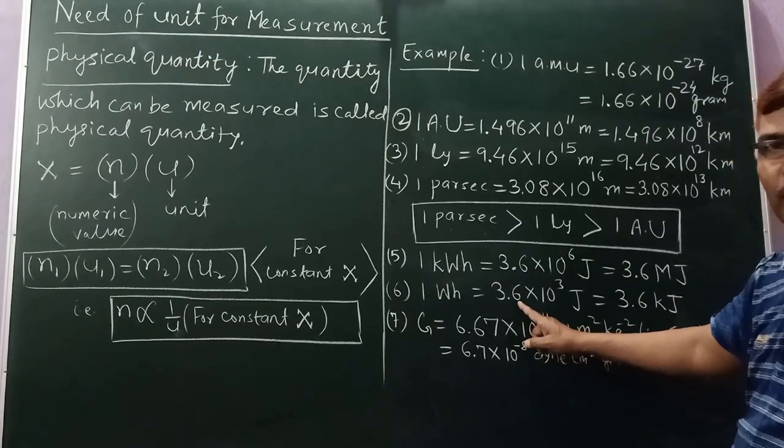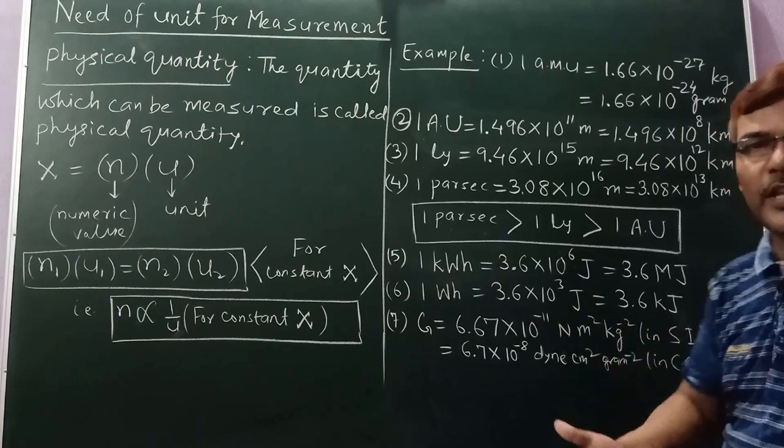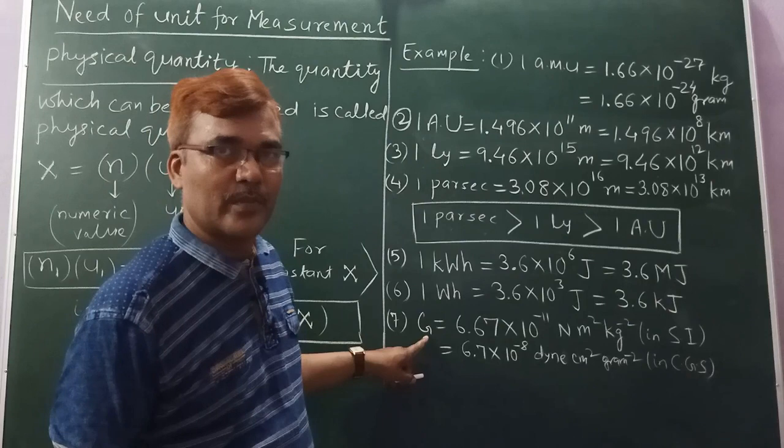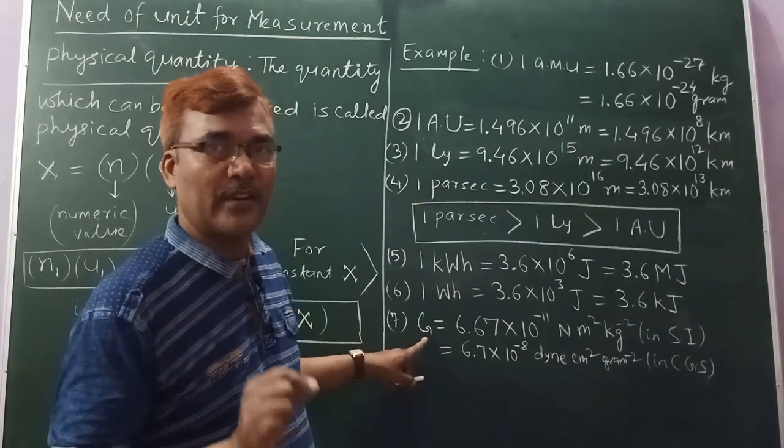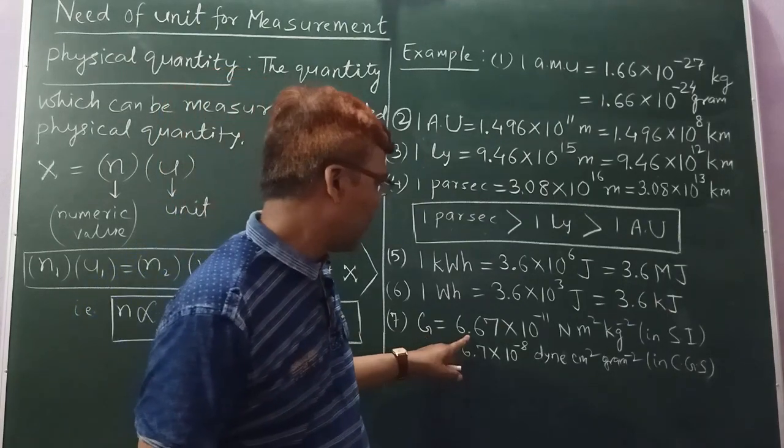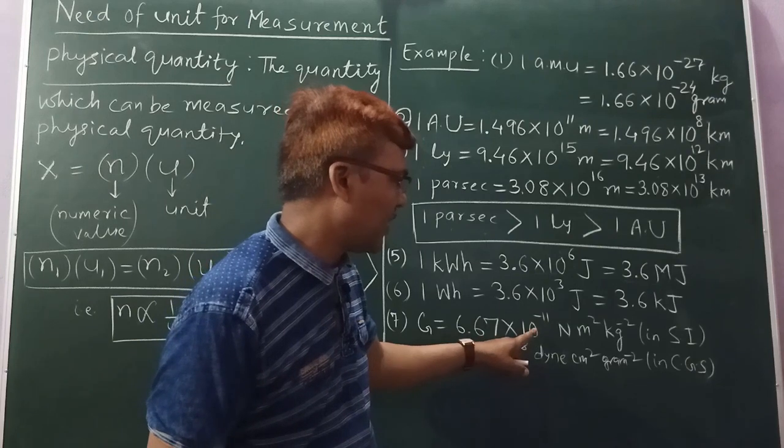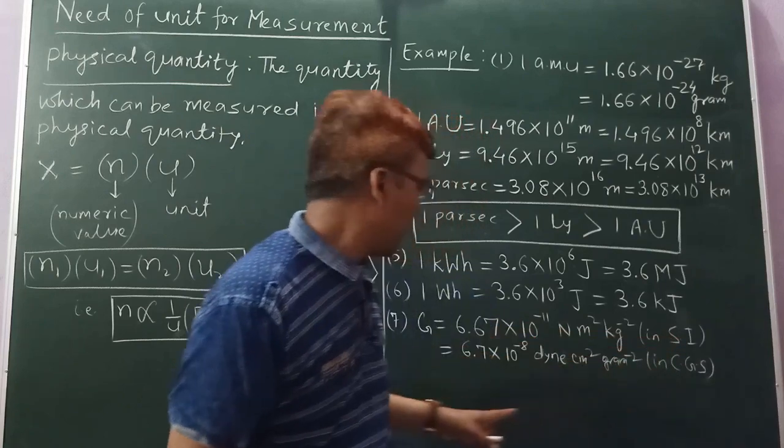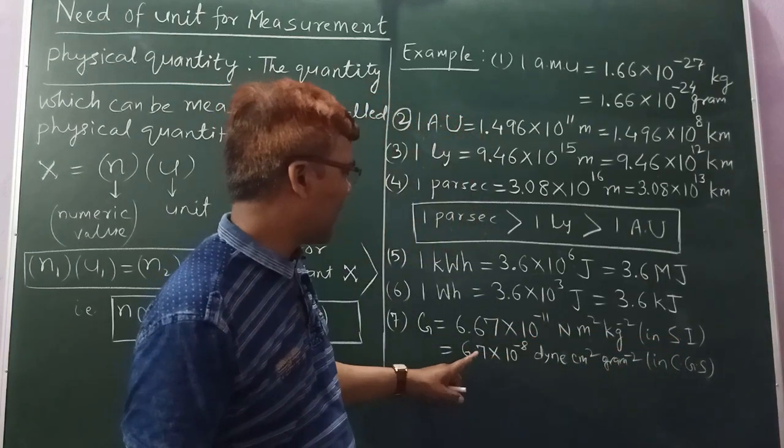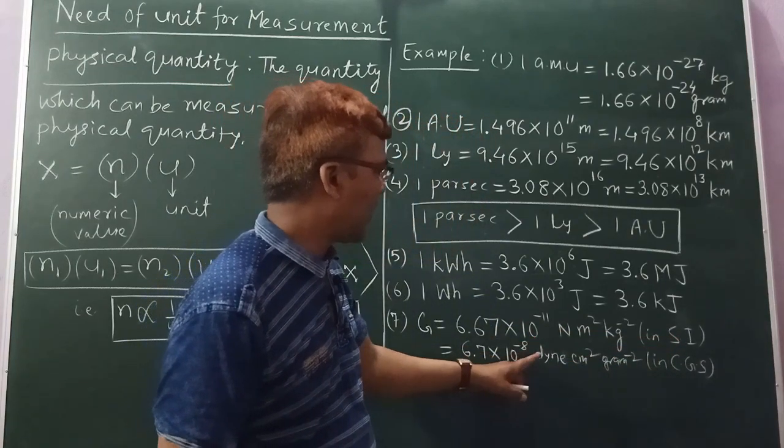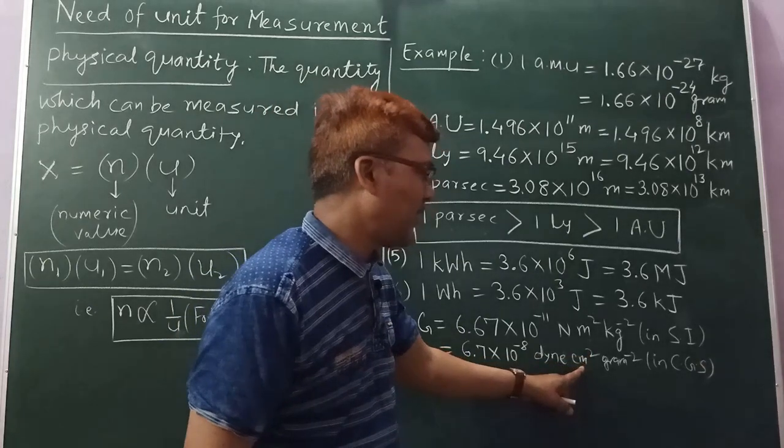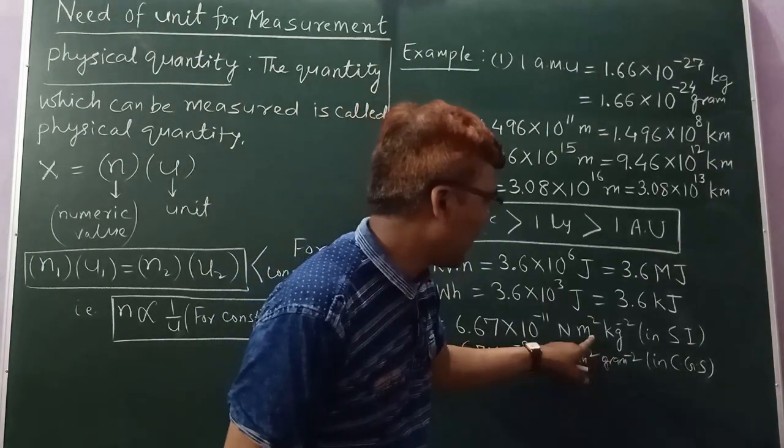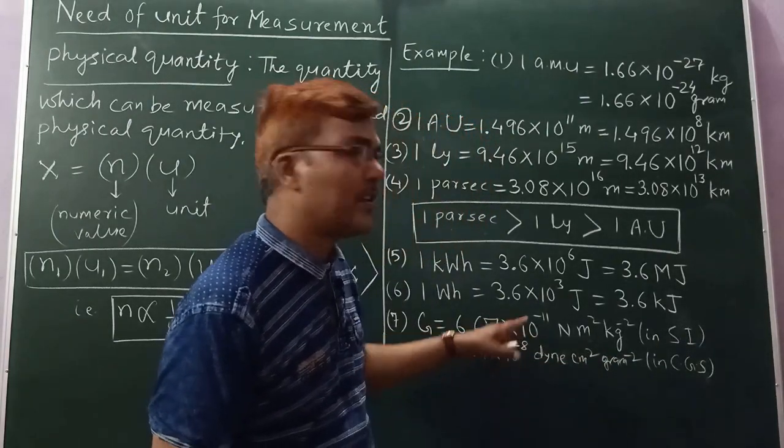This is the universal gravitational constant, which is 6.67 into 10 to the power minus 11 newton meter square per kg square in SI system. See, if the unit is changed, then the numeric value will be changed.